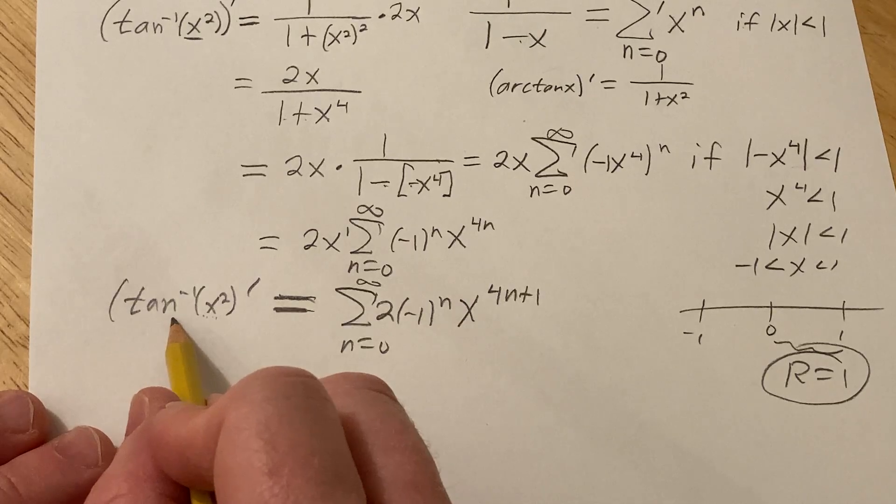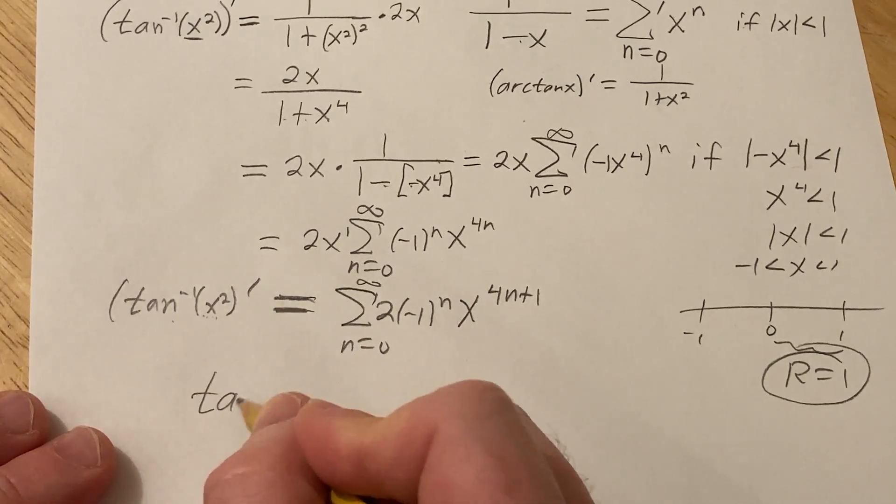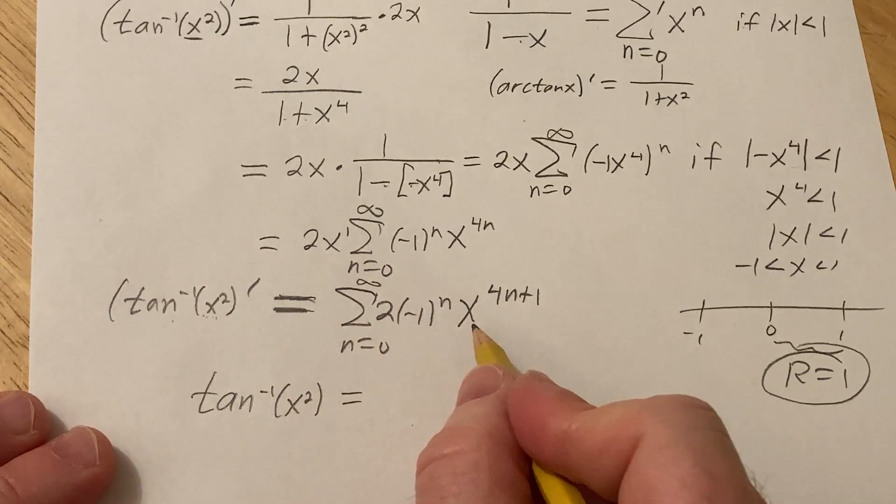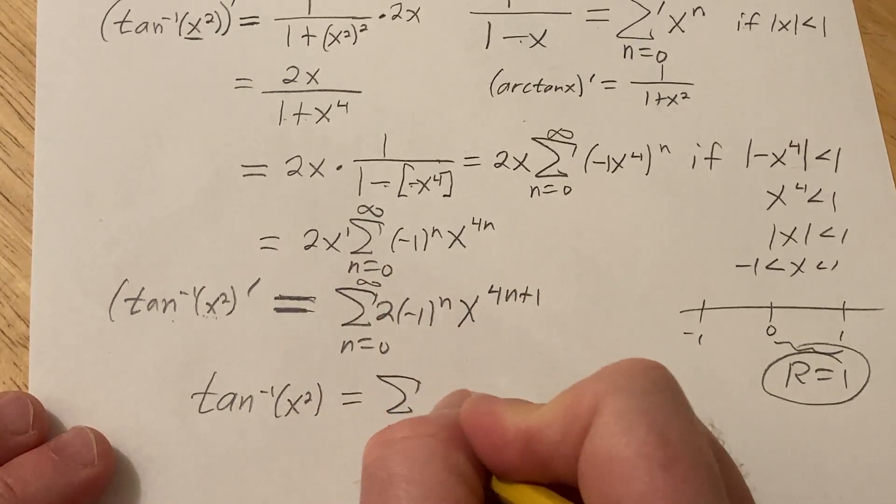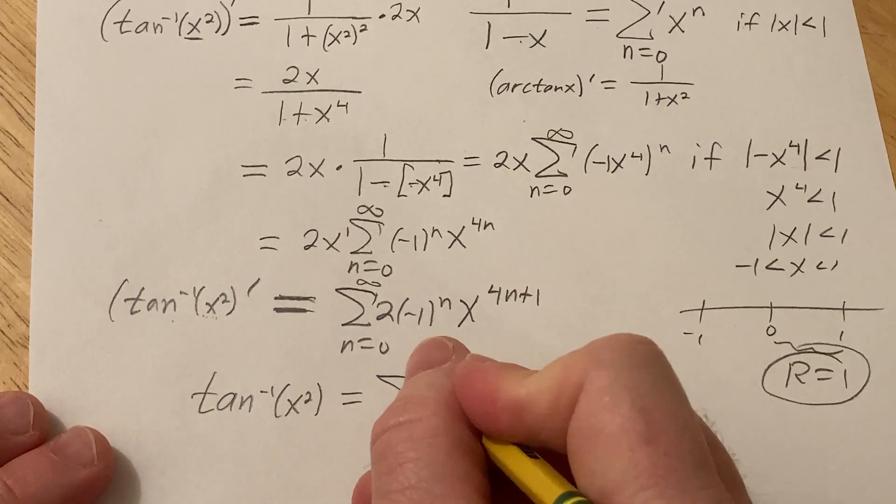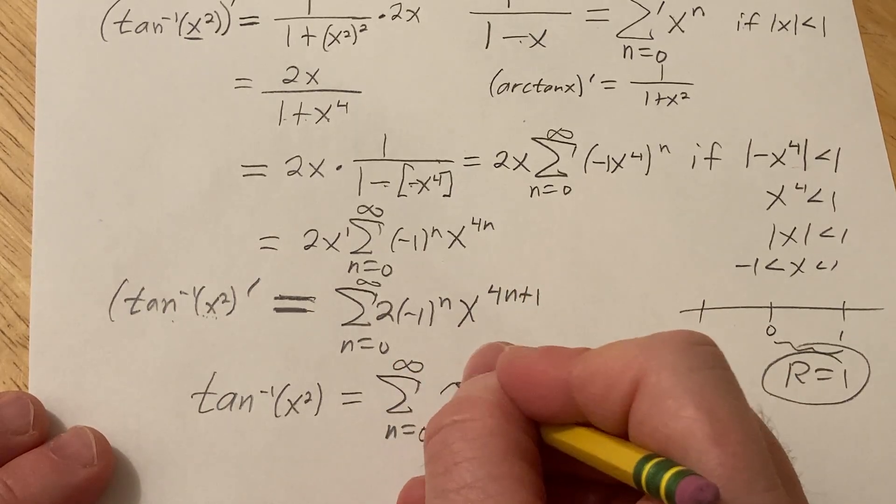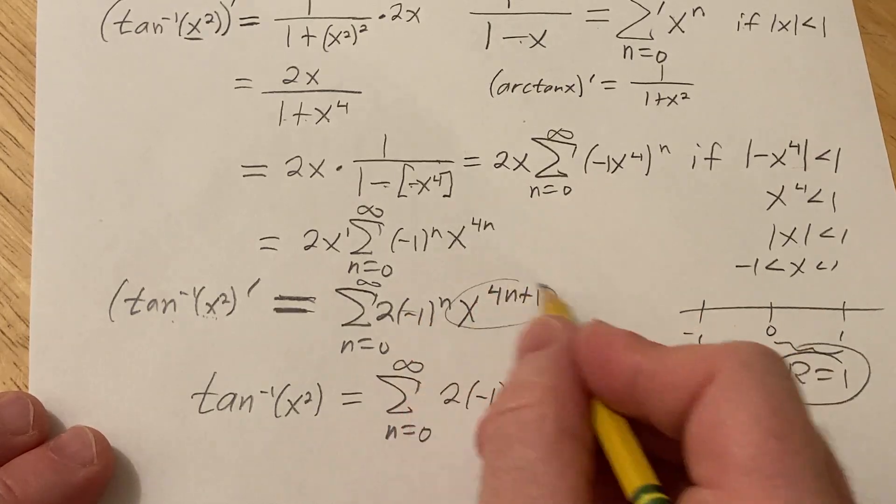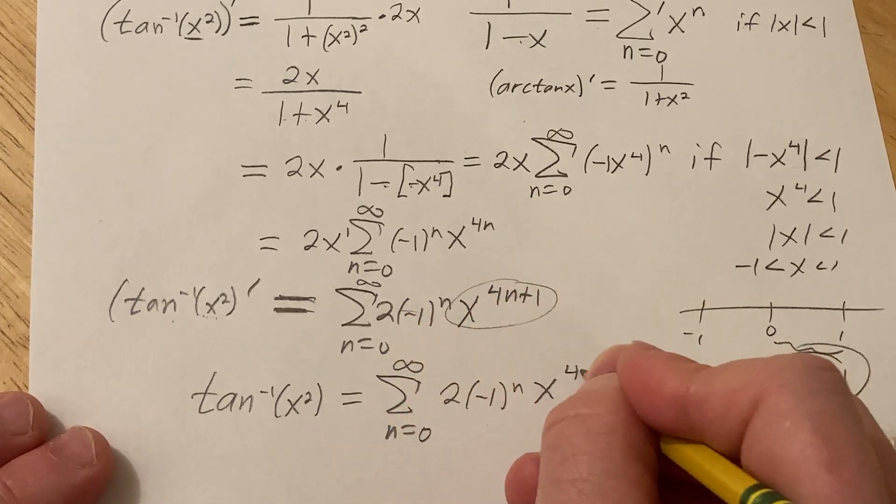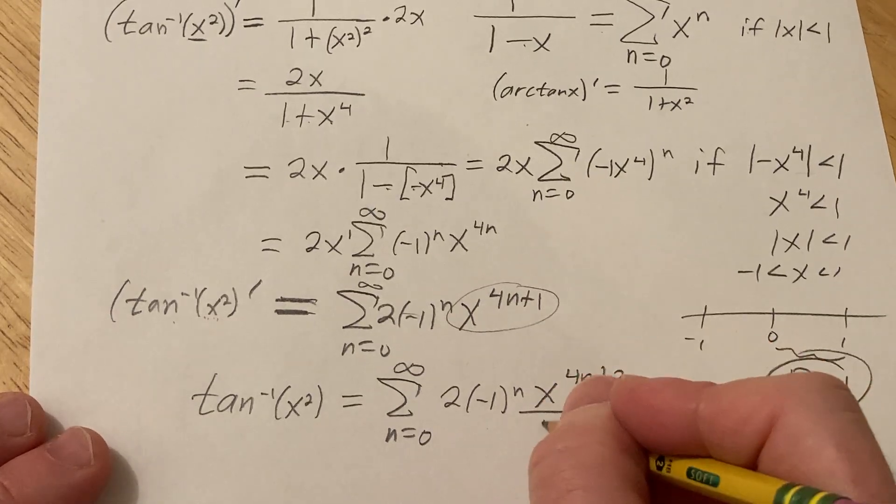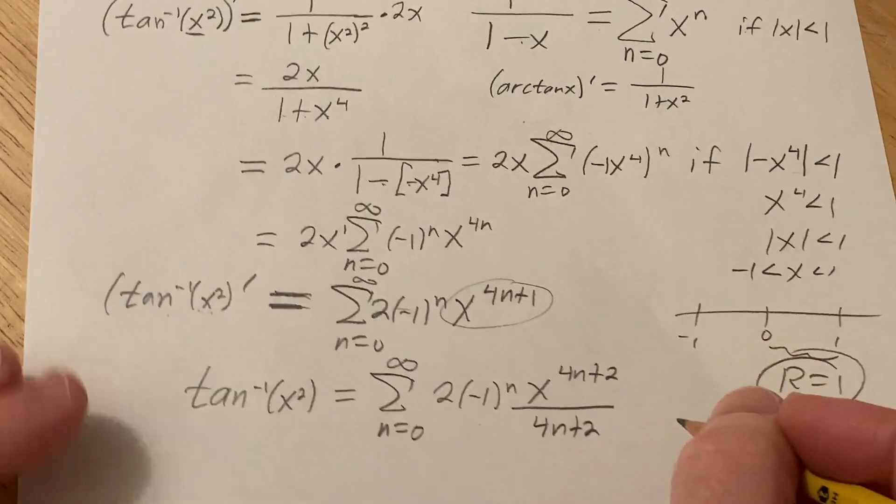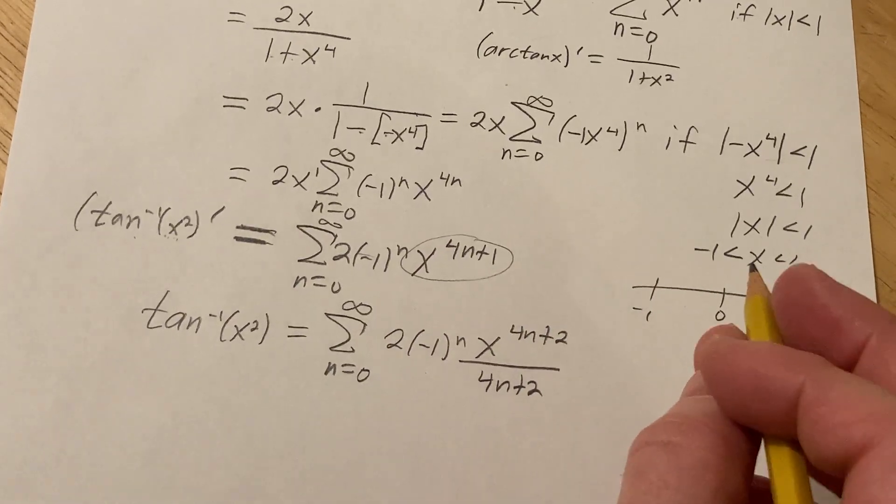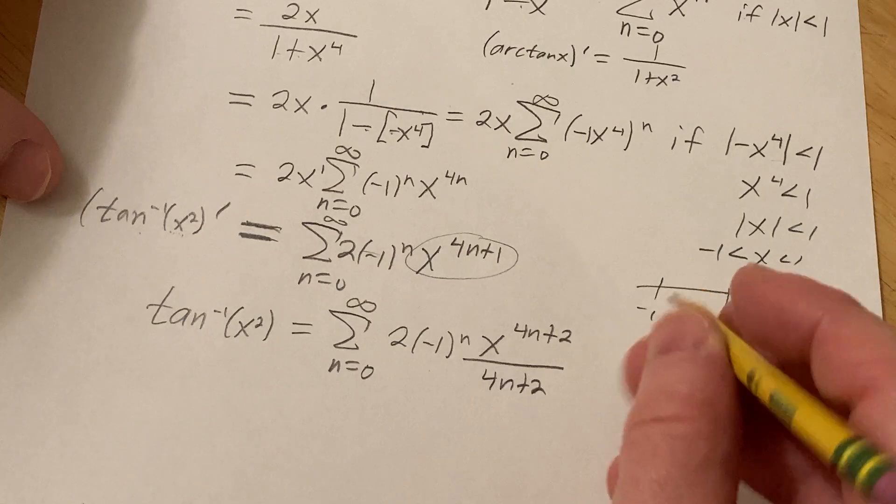And what is all this? This is the derivative of this guy here, okay, so we need to integrate this because we need to get this back. So integrating this we just get this. Integrating this we integrate term by term so we have the infinite sum, and this is going to be 2 times negative 1 to the n. Then this is a constant so you just integrate this, so you get x to the 4n plus 2 because you add 1 and then divide by the result, 4n plus 2.